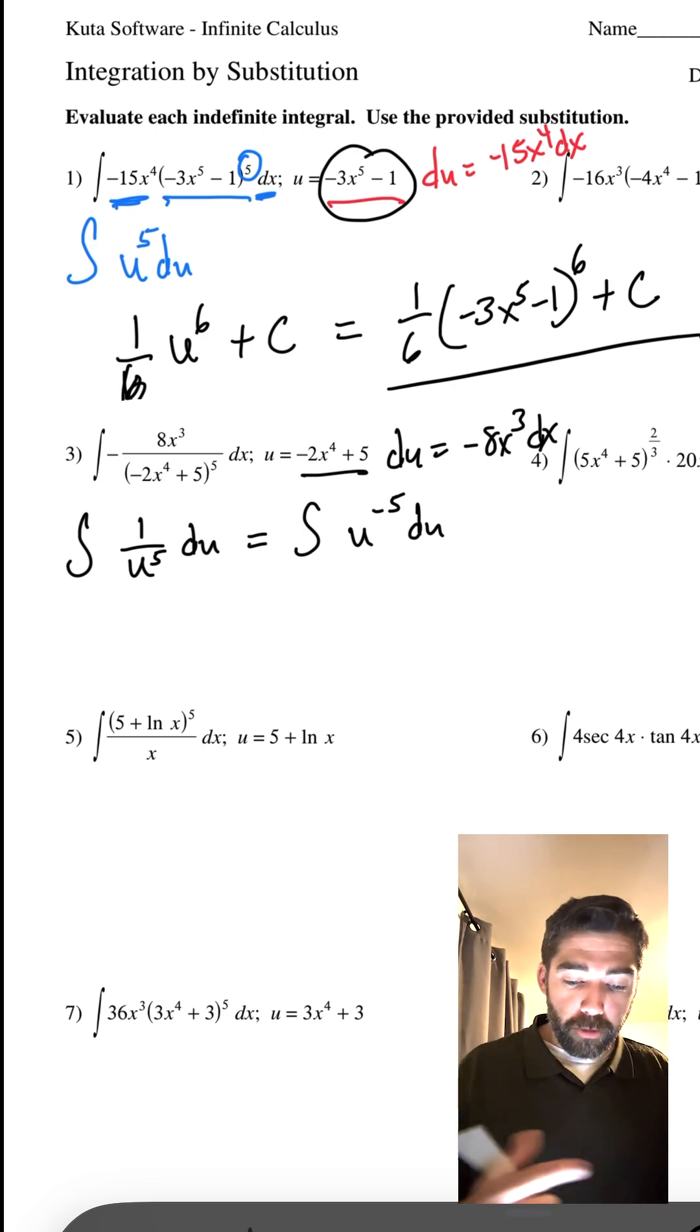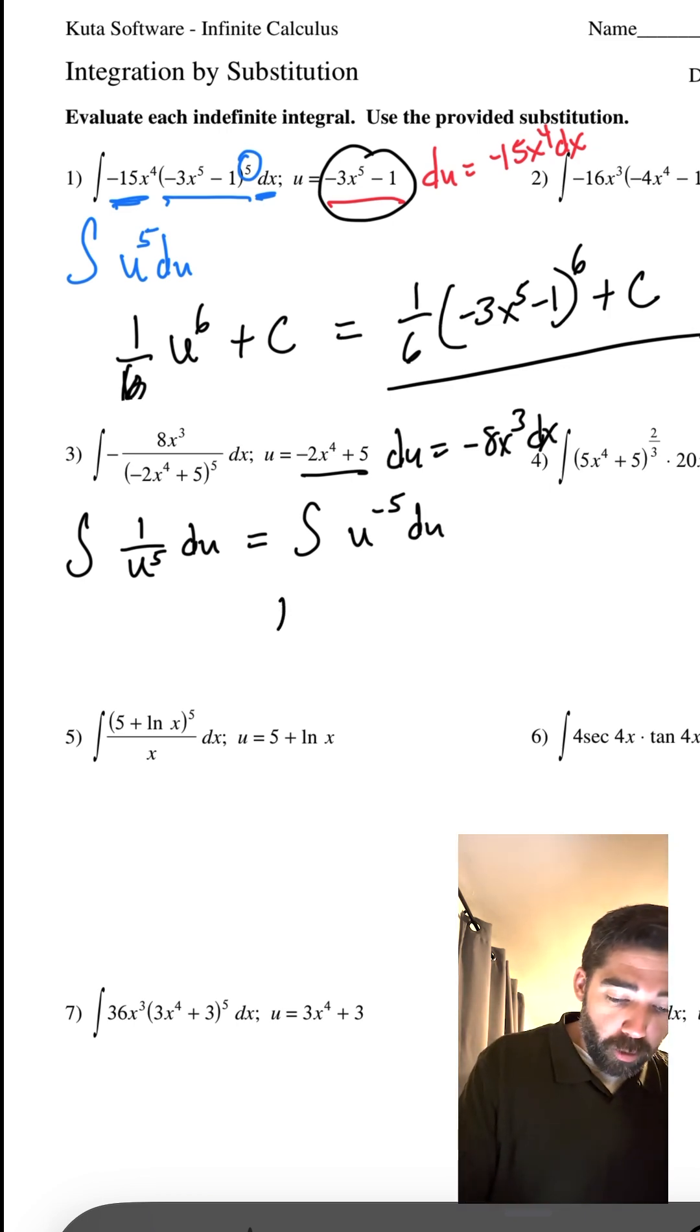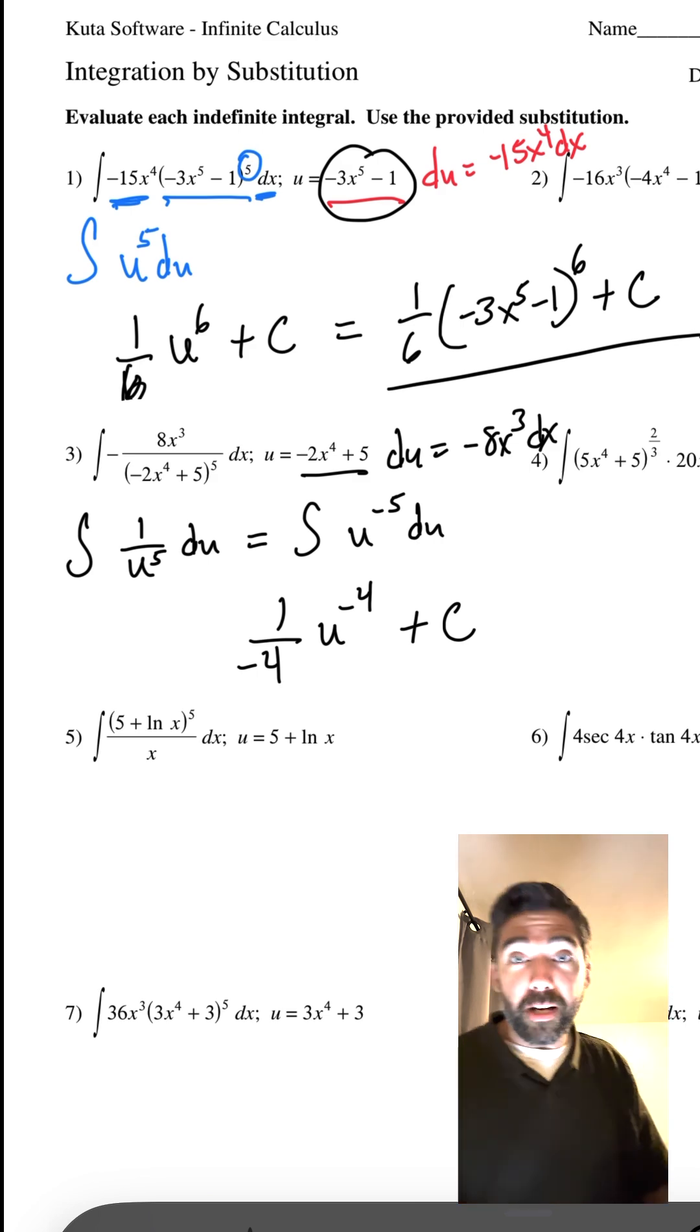How am I going to use it? Well, when I take the integral, remember, you're adding 1 to get that exponent correct. So it would be 1 over negative 4 U to the negative 4 plus C. That would be our answer.